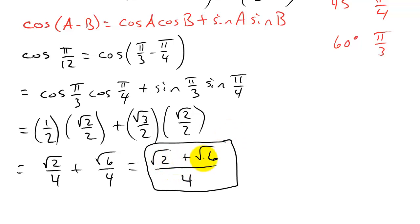Make sure you don't add these together and write √8 — you can't do that. The only way you can add radicals is if you have the same number under the radical sign. Alright, I hope this video has helped. Check out my other videos, and if you like them you can subscribe. Thanks!